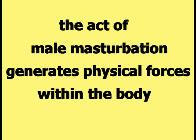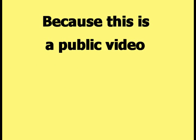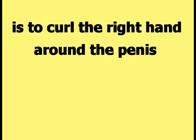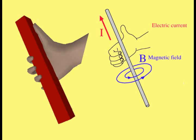According to happy theory, the act of male masturbation generates physical forces within the body that behave in the same way as the magnetic field lines and electrical current in an electrical wire behave. Because this is a public video, a rectangular box will represent a penis. This comparison picture demonstrates how the right hand curled around the rectangular penis object for masturbation resembles the right hand curled around the electrical wire to perform the right hand rule.